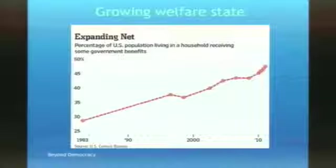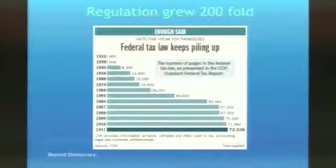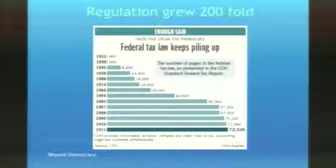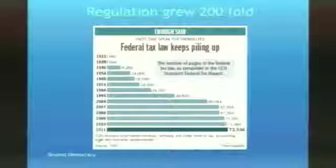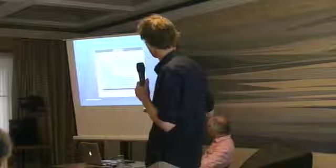Regulation has grown 200-fold. This is the 'land of the free' — the US — but in Europe it's just as bad. This is the tax law: the federal code of regulation used to consist of one book 100 years ago; now it's 200 books, and that's just one book for the index alone.